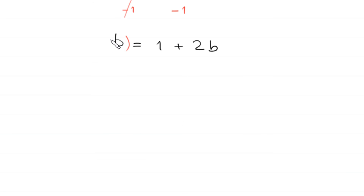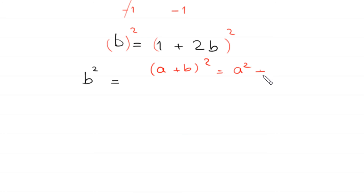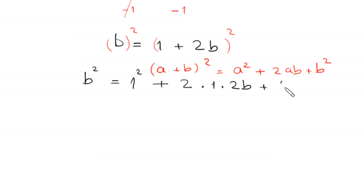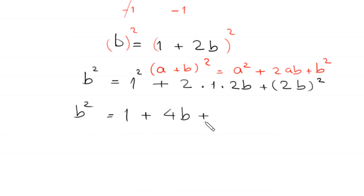Now we square both sides of this equation. So b squared is equal to, by using the algebraic identity a plus b whole squared equals a squared plus 2ab plus b squared, this 1 plus 2b whole squared becomes 1 squared plus 2 times 1 times 2b plus 2b squared, which gives 1 plus 4b plus 4b squared.